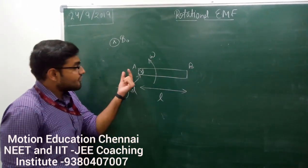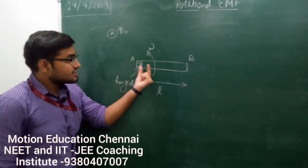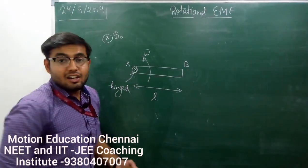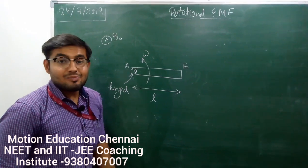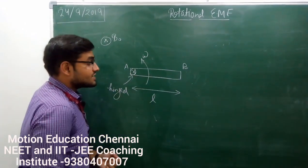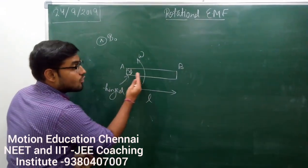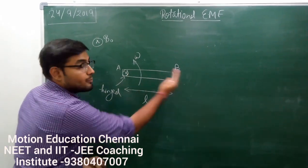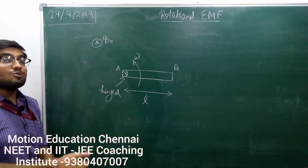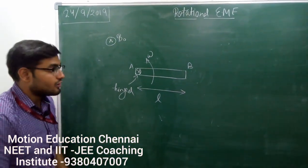If I look at this rod, the velocity of all the parts won't be the same — it will vary as I move from A to B. So I cannot directly use the formula; I need to integrate over here.